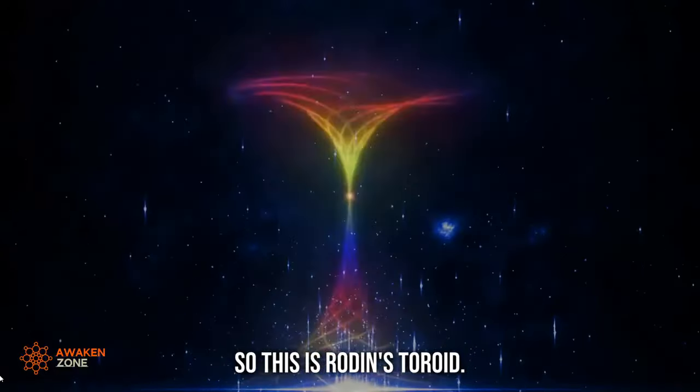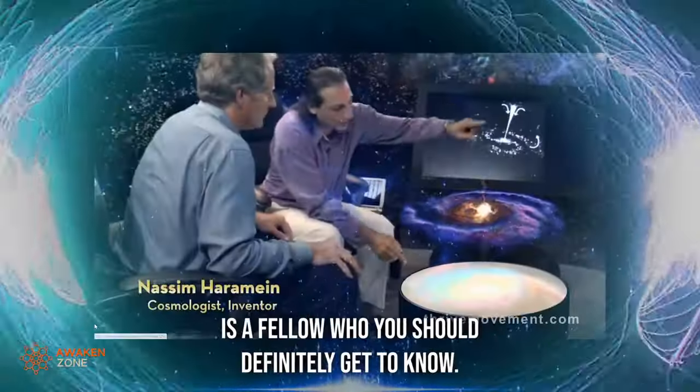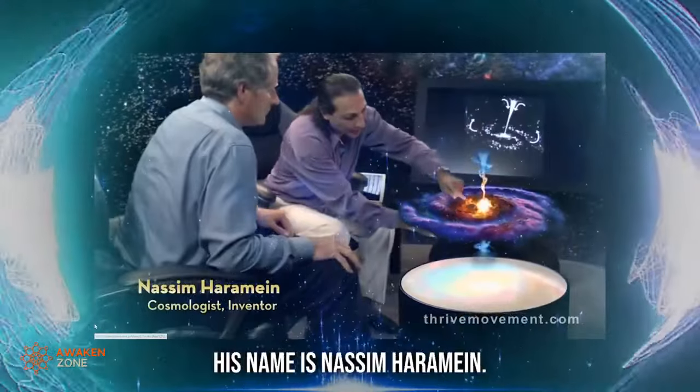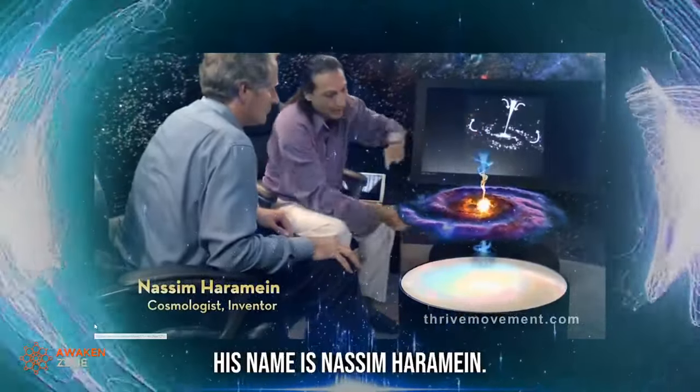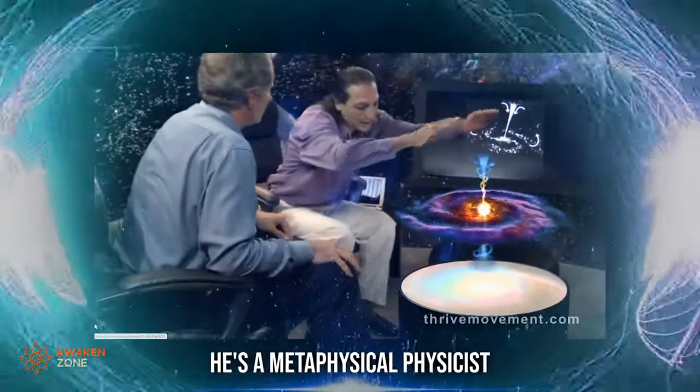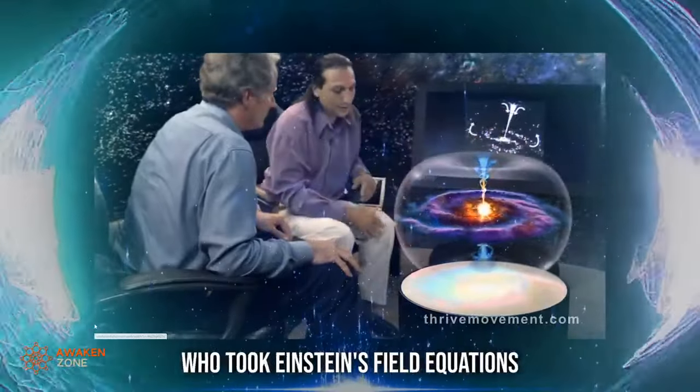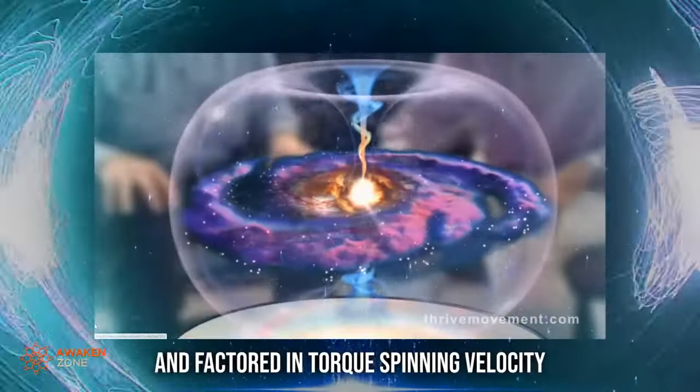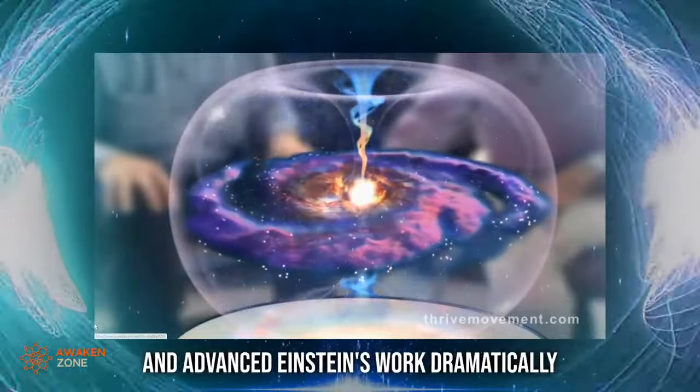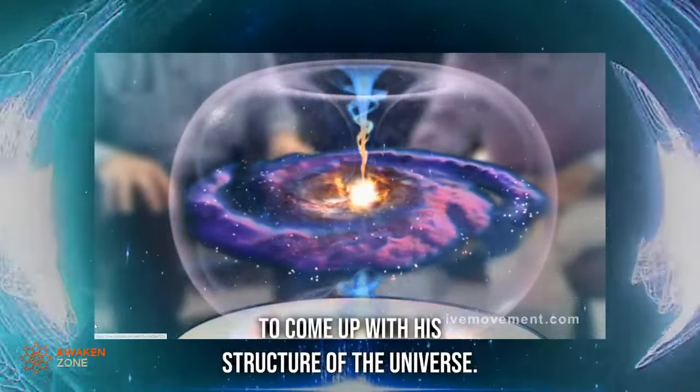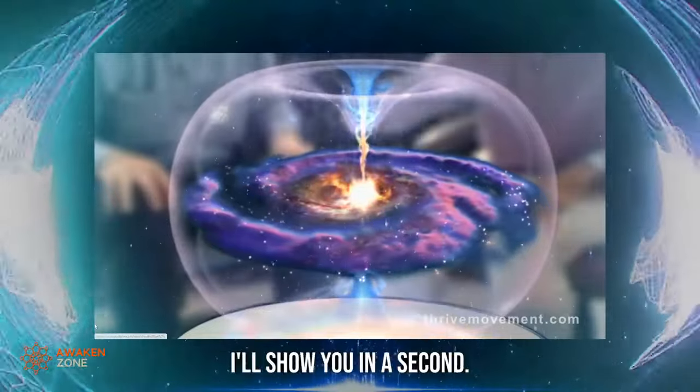And from this simple work, he developed the more complex toroid structure of the universe. So this is Rodin's toroid. Now, sitting in the audience is a fellow who you should definitely get to know. His name is Nassim Haramein.